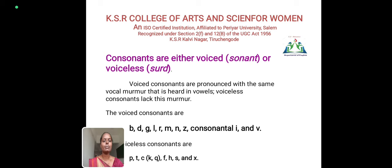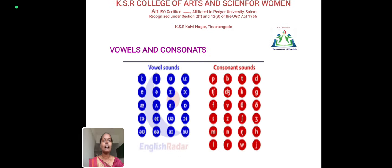Voiceless consonants are P, T, C, Q, F, and S. These sounds are voiceless consonants. Here is a picture for vowels and consonants — we can see the sounds listed in alphabetical order. Thank you.